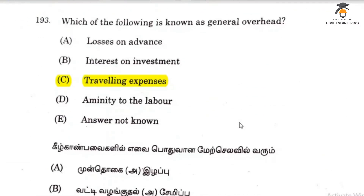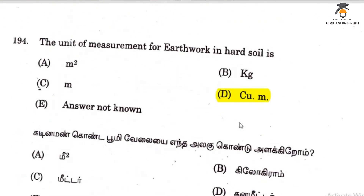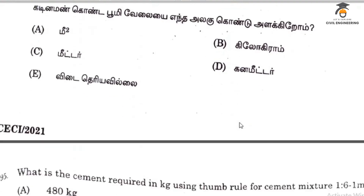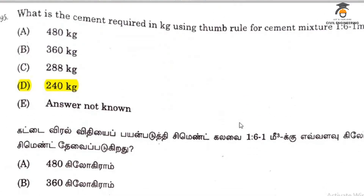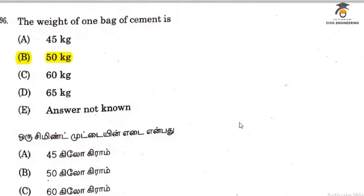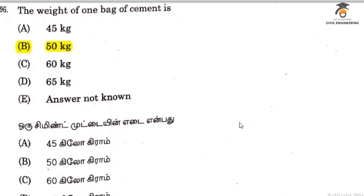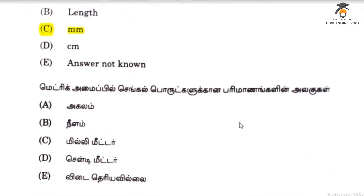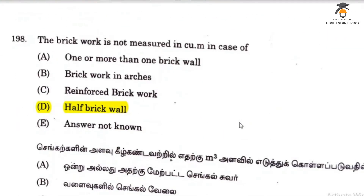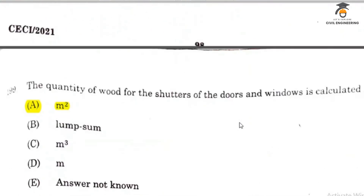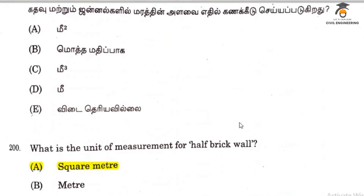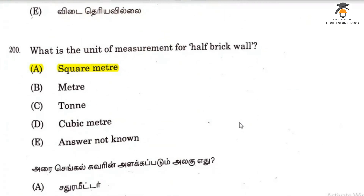Question 193 is traveling expense. Question 195 is cubic meter. Question 195 is 240 kg. Question 196 is 50 kg. Question 197 unit is mm. Question 198 is half-brick wall. Question 199 unit is meter square. The 200th question on the unit measurement of half-brick wall is square meter. Question 150 unit is cubic meter.